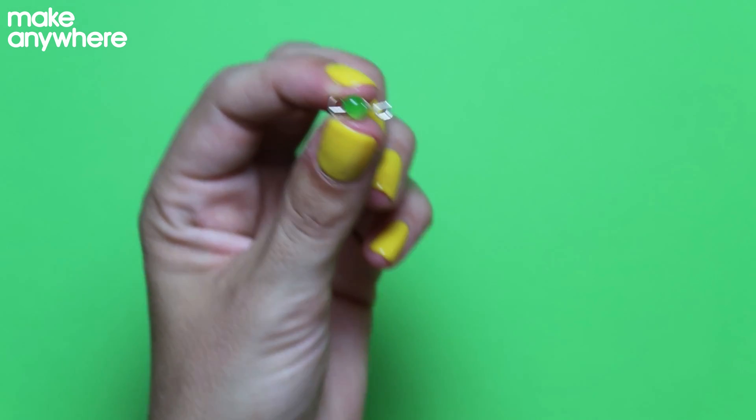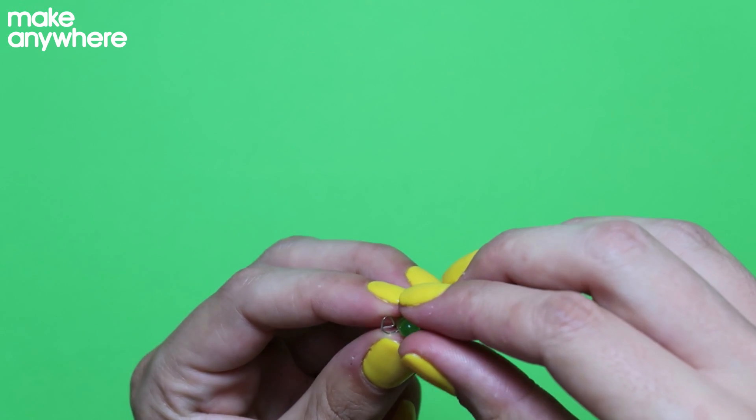This will help us to identify it when we're making our badge. Do the same with the other side. Now we have our two LEDs.